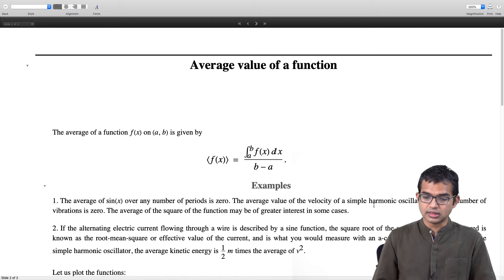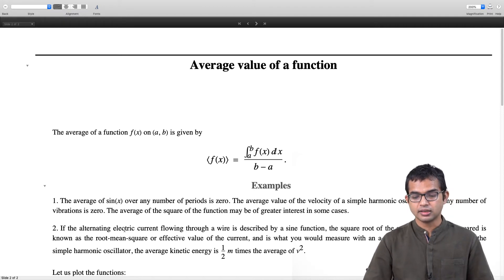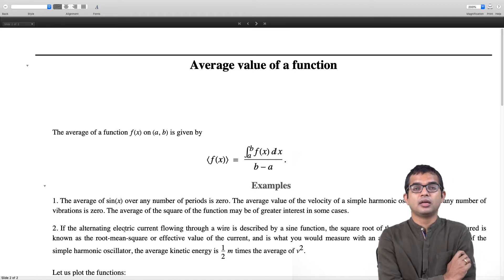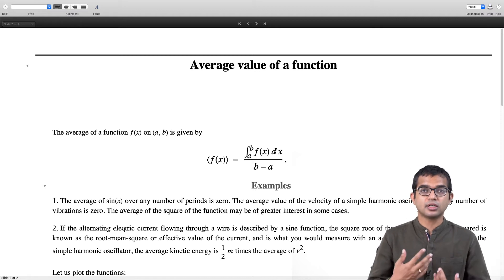Many times it is useful to consider the average of the square of your function. For example, when you are looking at alternating electric current, it is a periodic function and the square root of the average of sin squared is known as the root mean square or effective value of the current. If you just blindly do an average of this current function you would just get 0.